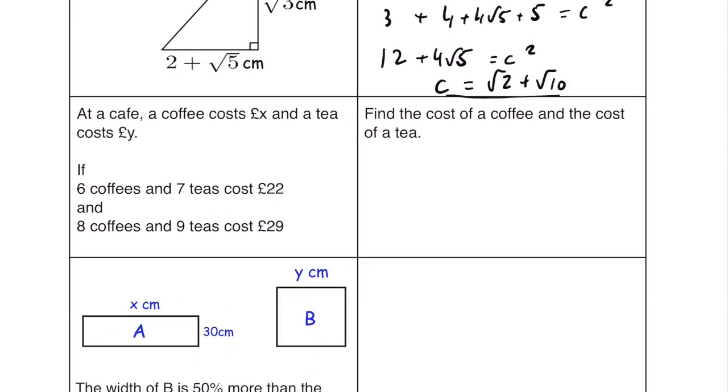At a cafe a coffee costs x pounds and a tea costs y pounds. 6 coffees and 7 teas cost 22, 8 coffees and 9 teas cost 29. Whenever you see something like this we have two unknown values the price of the coffee and the price of the tea. Immediately this tells us simultaneous equations. So you set up your equations. We have 6x plus 7y equals 22 and we have 8x plus 9y equals 29. We solve this just like simultaneous equations.